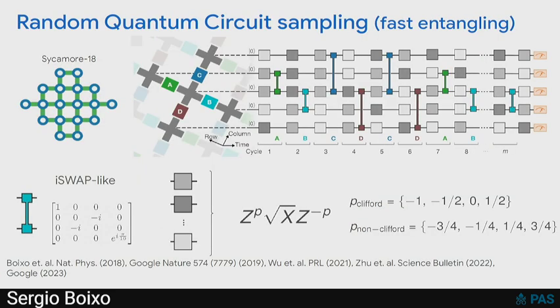The first milestone is what we call a beyond-classical or classically intractable computation — or we used to call it quantum supremacy. The idea is very simple: we run a quantum circuit and then check how well we can sample the outputs. It's just the first test on the process to building a quantum computer. We start with this because it's simpler than error correction. And importantly, as was emphasized, it allows you to measure the fidelity of the whole system, which is very important for system engineering.